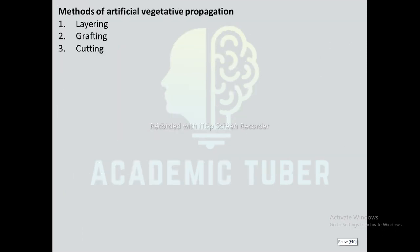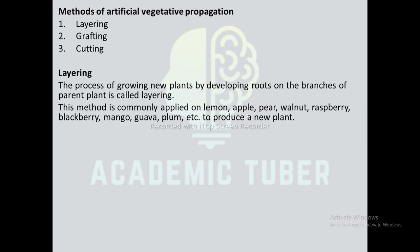Now we are going to discuss some methods of Artificial Vegetative Propagation. Layering, grafting, cutting, and tissue culture are widely used Artificial Vegetative Propagation techniques. Layering: The process of growing new plants by developing roots on the branches of a parent plant is called layering. A layer is the rooted stem following removal from the parent plant.